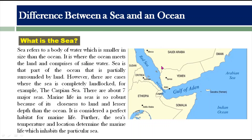A sea is partially or almost completely surrounded by land area. So a sea is that part of the ocean that is partially surrounded by land. However, there are cases where the sea is completely landlocked — for example, the Caspian Sea. There are seven major seas in the world.